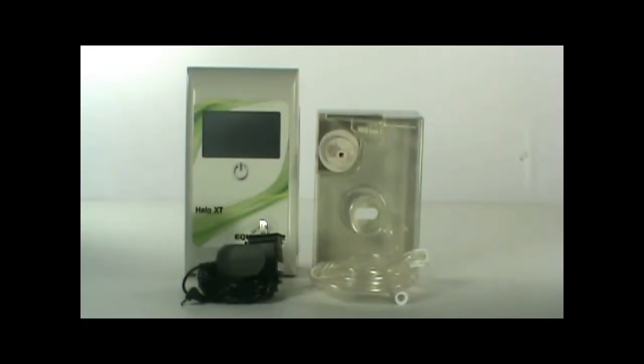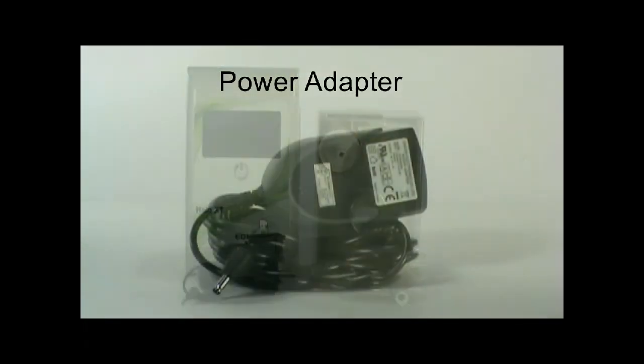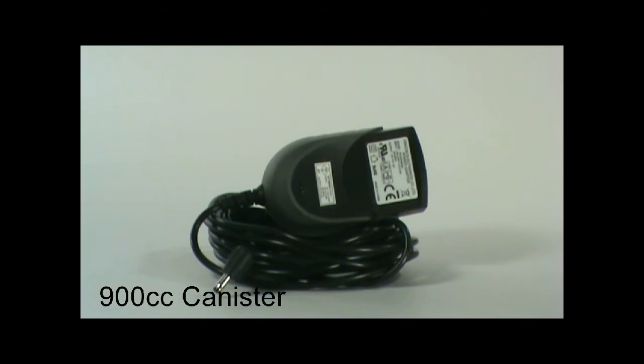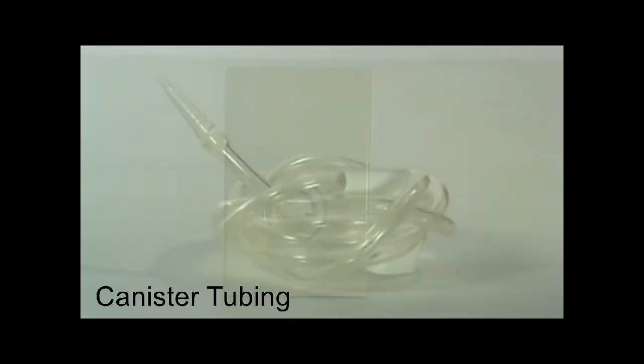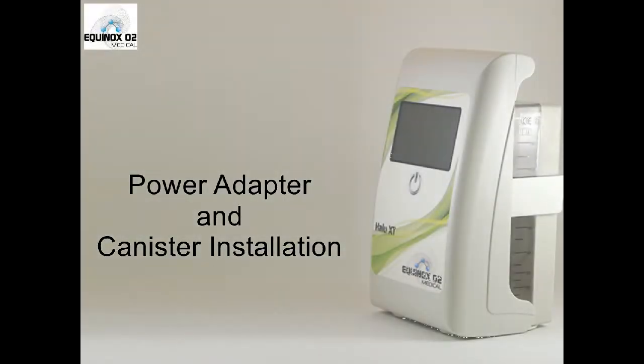Halo XT NPWT pump comes with the following: power AC adapter, 900cc canister, and your canister tubing. Power adapter and canister installation.